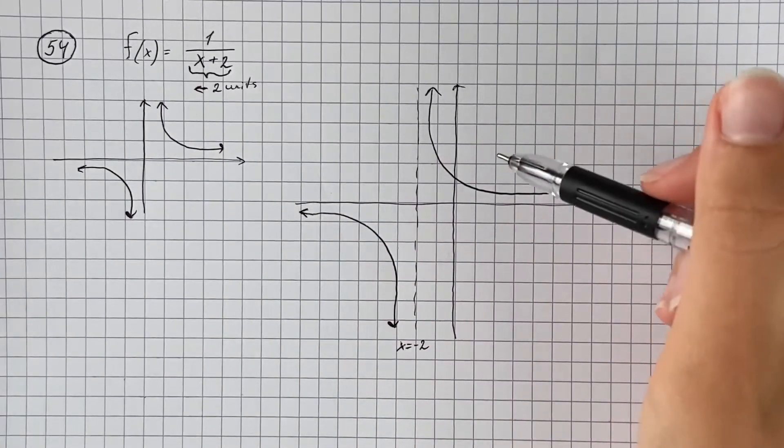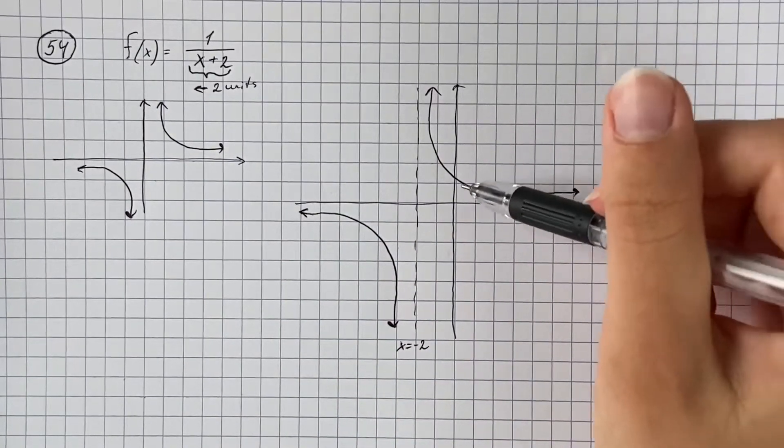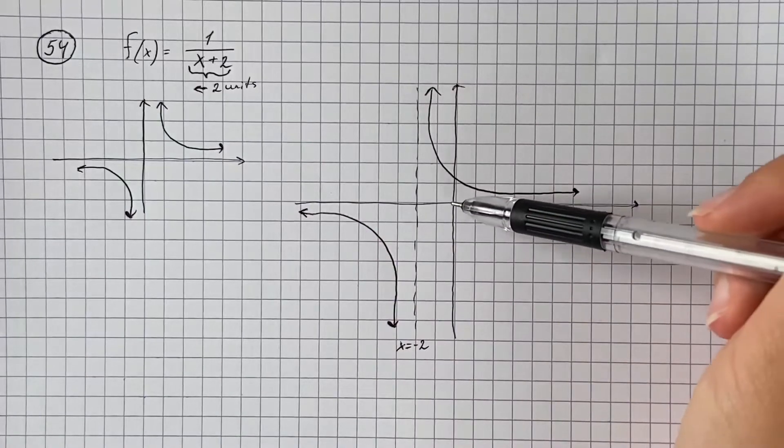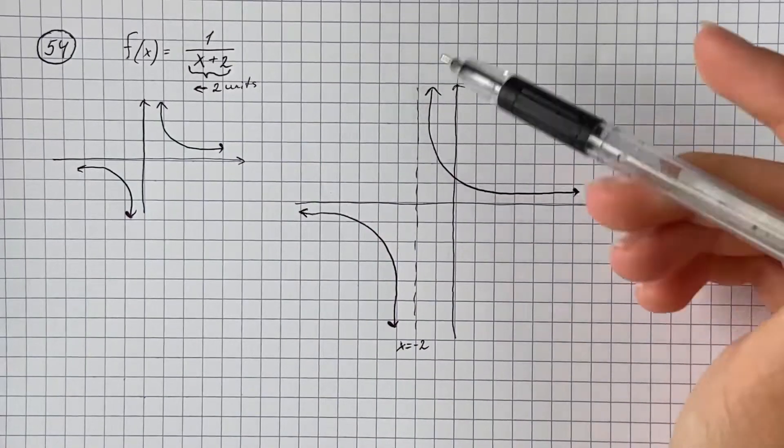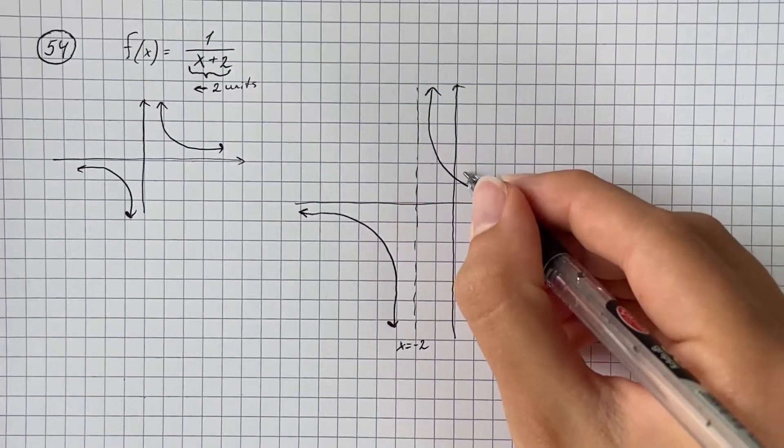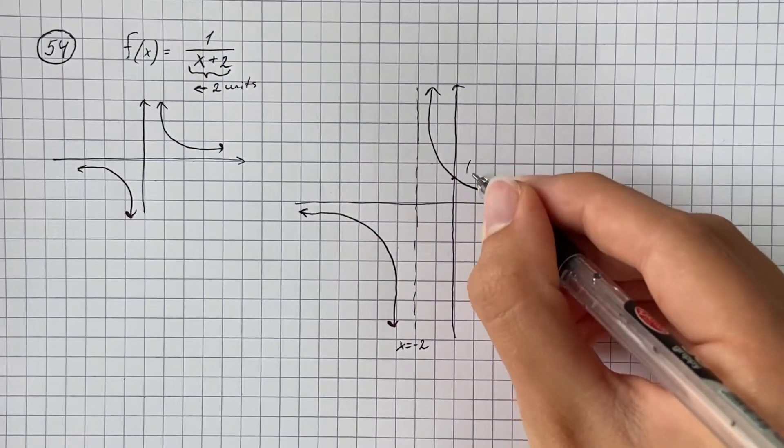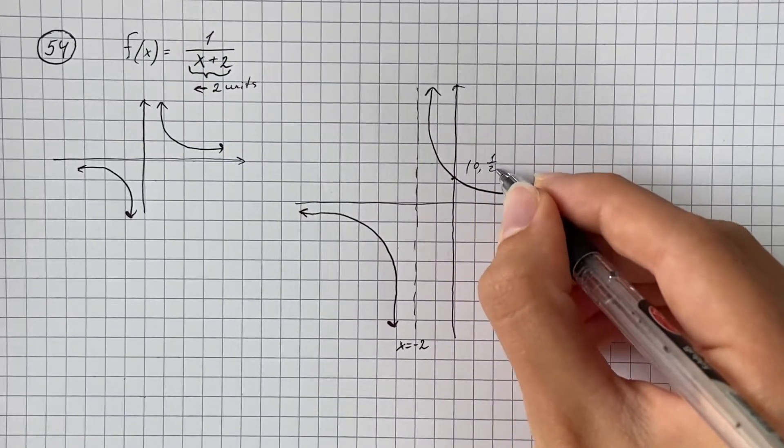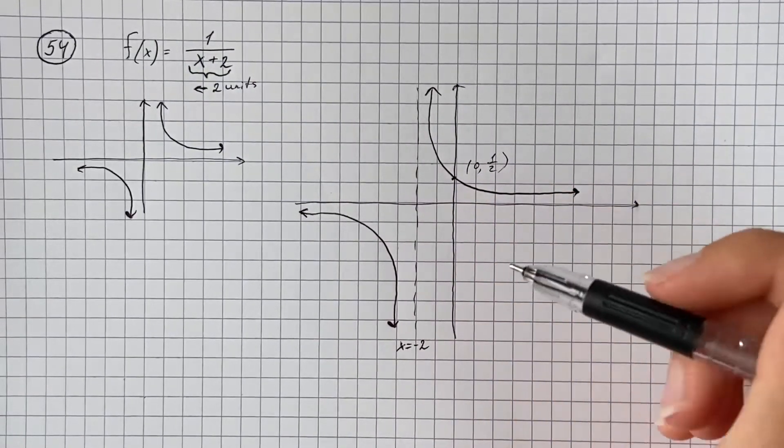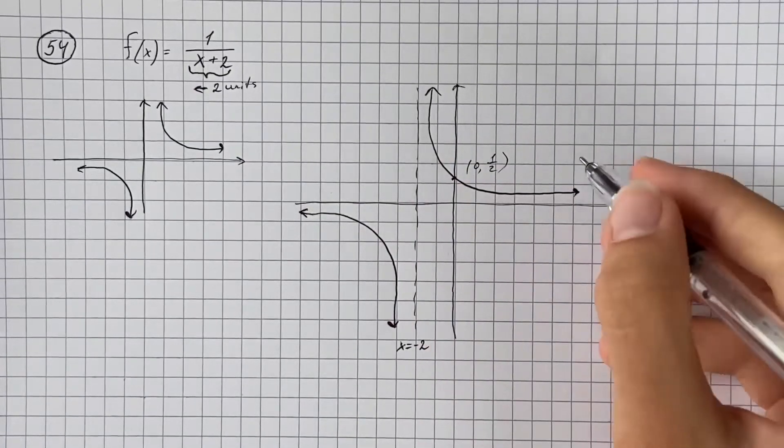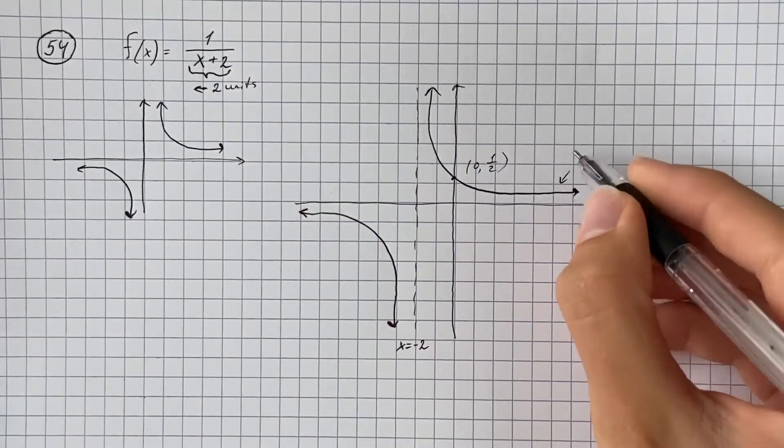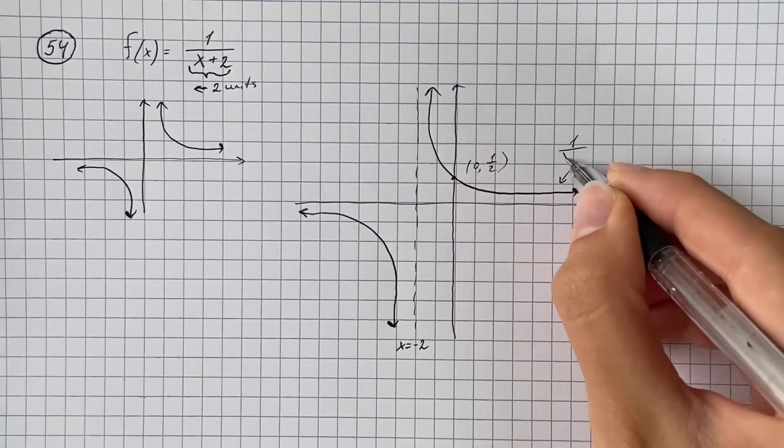And you can plot some extra points. If we plug in x equals 0, we get the point of 1 half, so that's going to be 0 comma 1 half. So this was just the sketch of function 1 over x plus 2.